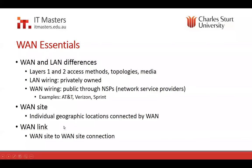A WAN site is generally an individual geographic location connected by WANs. A WAN link is simply a WAN site to WAN site connection — anything that connects two of your offices or hubs together. A WAN site and a LAN site are basically the same thing for the purposes of what we're discussing here.